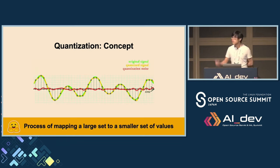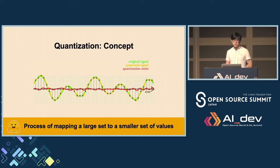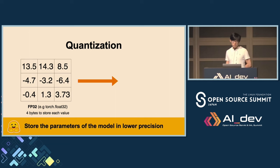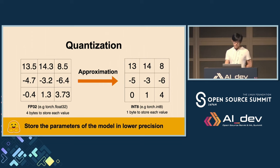The key topic of today is quantization, a really nice compression technique. The concept is very easy — it's the process of mapping a large set to a smaller set of values. With LLMs, most model weights are stored in FP32, and it's worth exploring if we can store these weights in lower precision, for example in 8 bits. If we do this approximation, our model will end up being four times smaller, which is a pretty big deal.